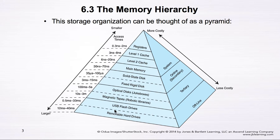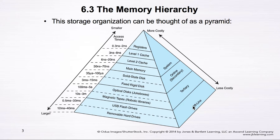For example, at the bottom we have the removable hard drives. The access time of the hard drive is around 12 to 40 milliseconds. This kind of offline storage requires either human or robotic intervention before any data can be accessed. The data must be transferred from the storage media to secondary memory first, before it can be transferred to the CPU for processing.